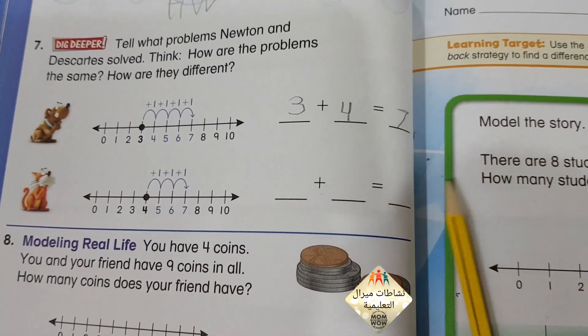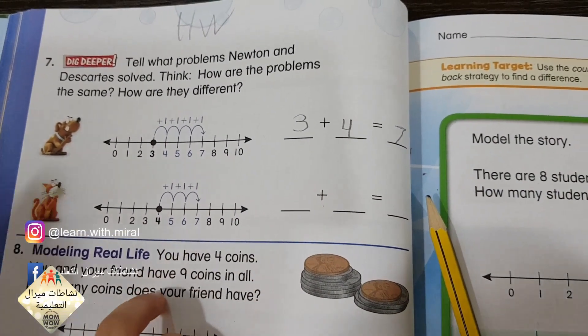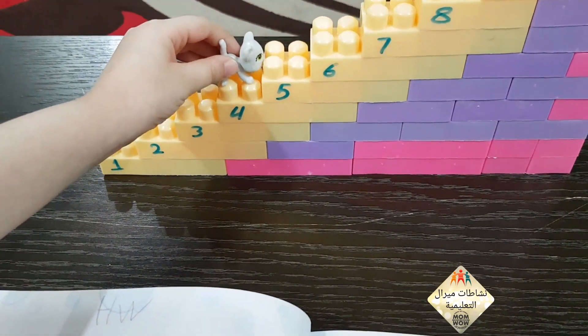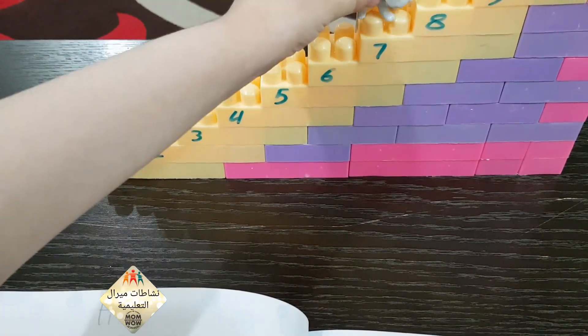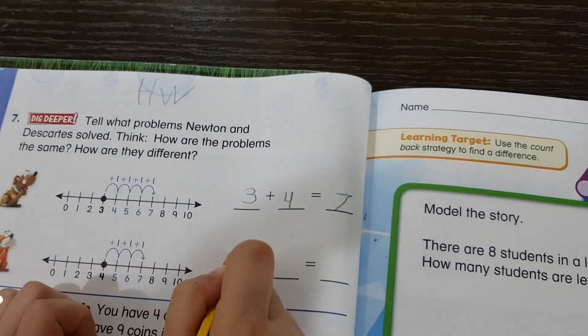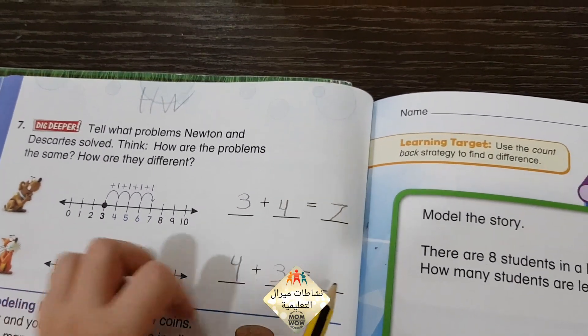Now 4 plus 3 equals 7. Let's see. 4 and plus 3. Let's see: 1, 2, 3. Equals 7. 4 plus 3 equals 7.